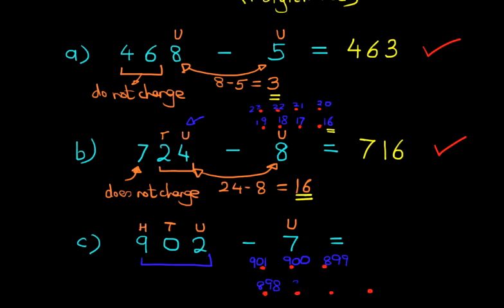Then we have 898. The next one is 897. Then we have 896. And lastly, we've got 895. And that is our answer. 895. So let's write this down. So 902 minus 7 equals 895.